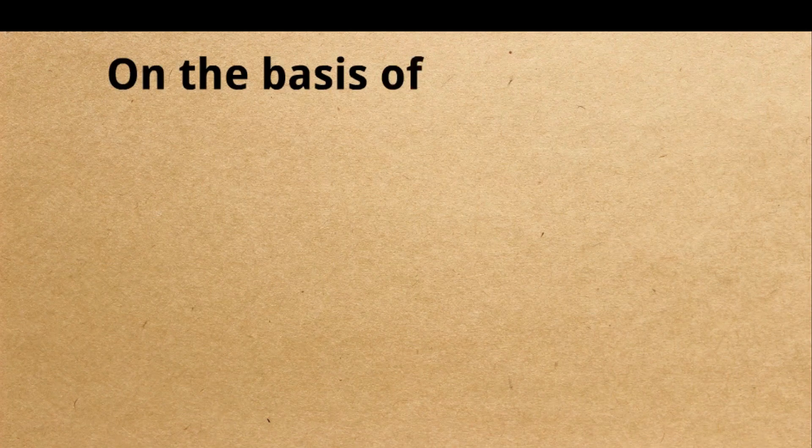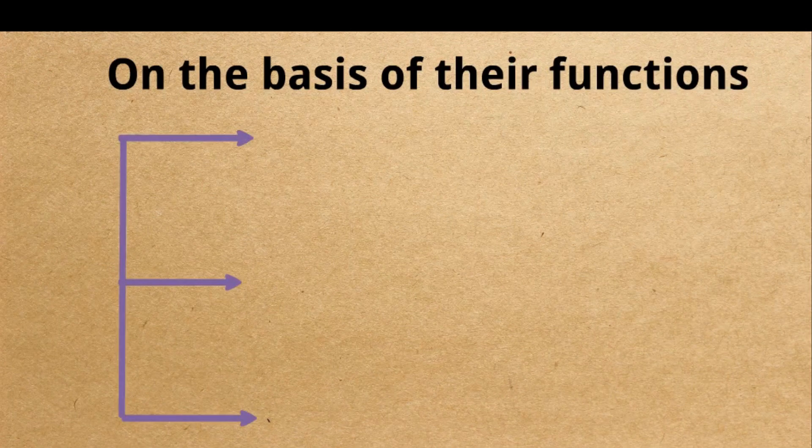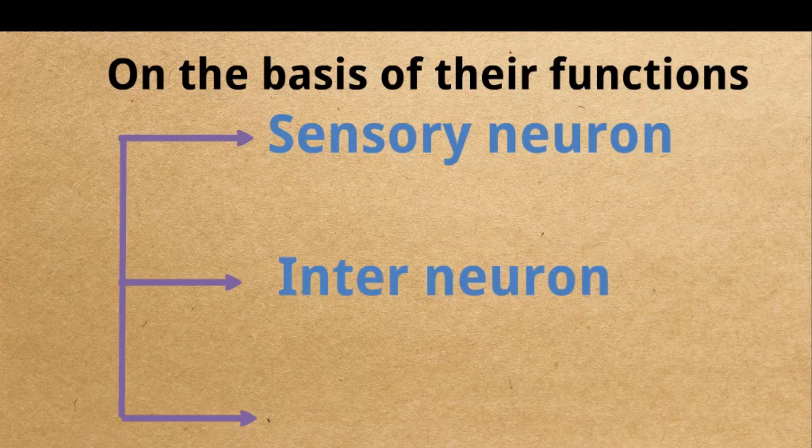On the basis of their functions, neurons are of three types: sensory neurons, interneurons, and motor neurons.